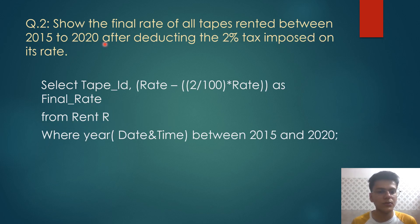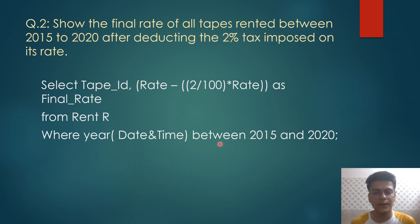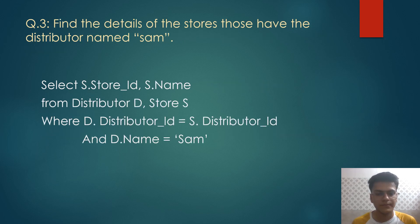The second query is to show the final rate of all tapes rented between 2015 to 2020 after deducting the two percent tax imposed on its rate. Here we have selected tape ID, and performed an operation on the rate attribute: rate minus two percent of rate, aliased as 'final_rate' in the output table. From the relation 'rent', where year extracted from the date-time attribute is between 2015 and 2020. 'Between' is used to specify the range of the output.